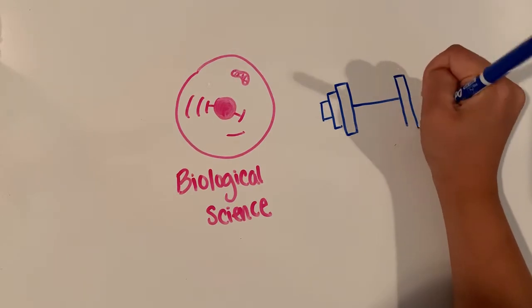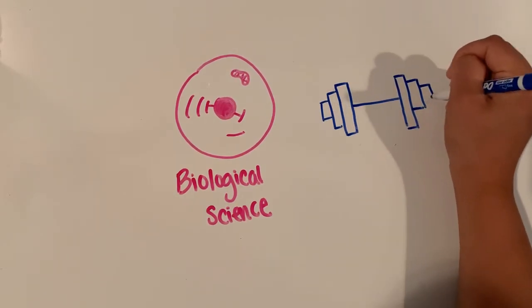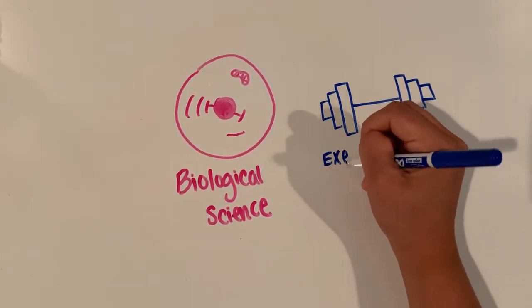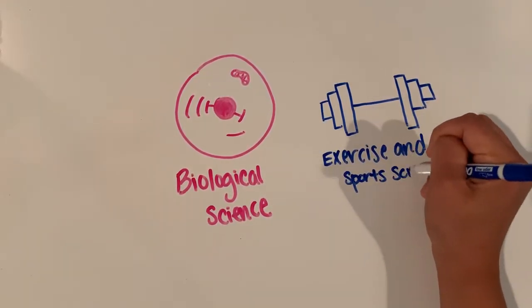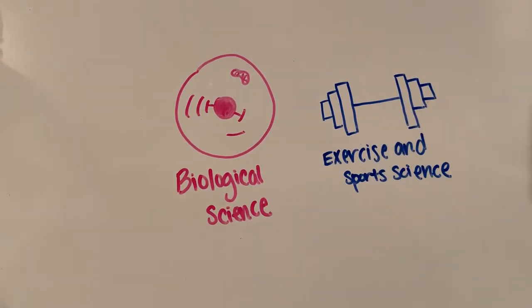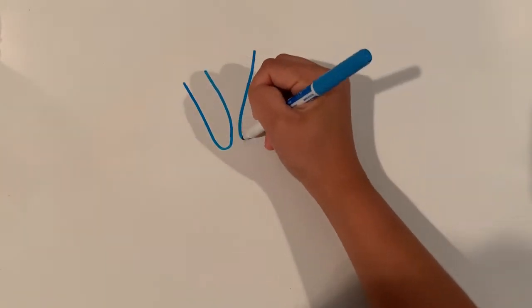Exercise and sports science applies biomechanics to human performance in athletics and could focus on the biomechanics of the ACL, for example, to see how forces of changing direction can impact a person's ACL.